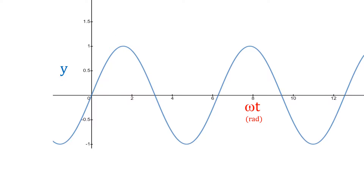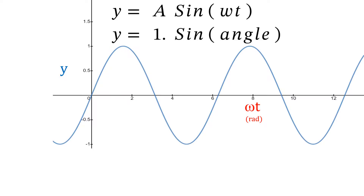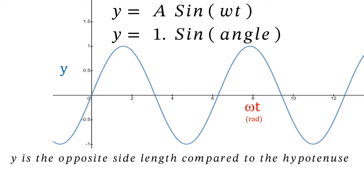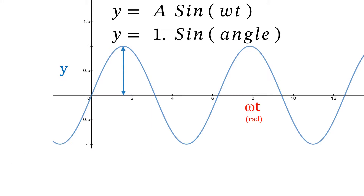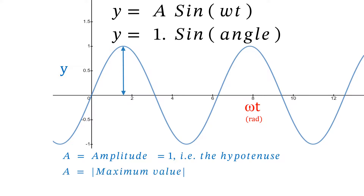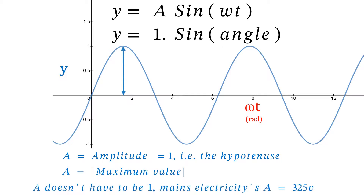Y equals a times the sine of omega t, where a is the amplitude. Y is the opposite side length compared to the hypotenuse, and the hypotenuse is the largest side of the triangle. A doesn't have to be 1 — mains electricity's A is 325 volts.